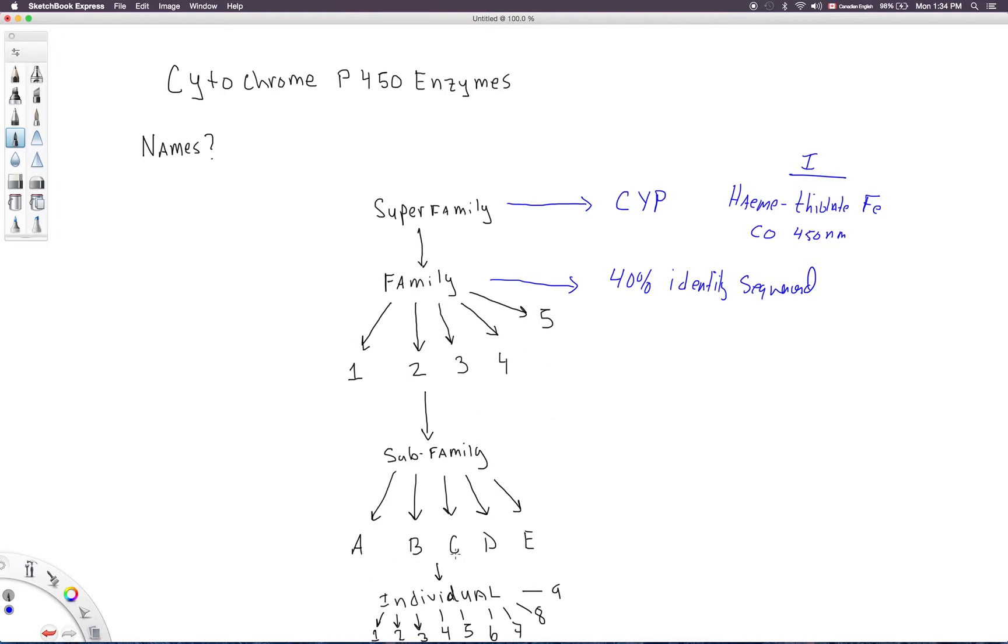And when we talk about inclusion criteria into these subfamilies, you're looking at 55% or more of the identity sequenced.